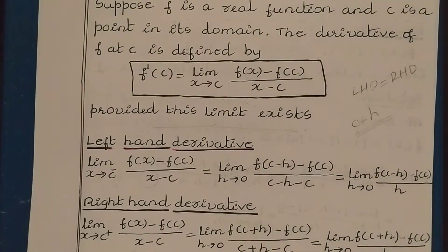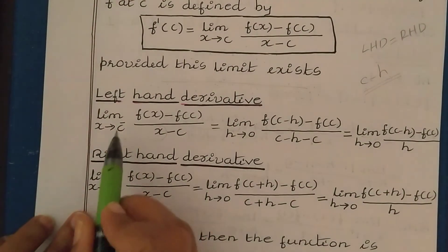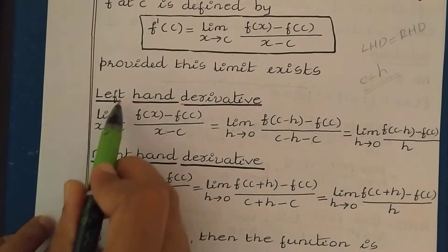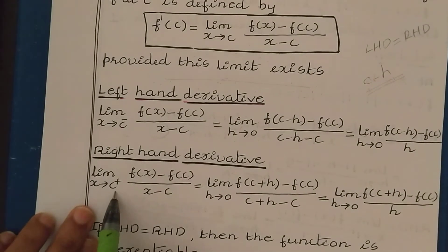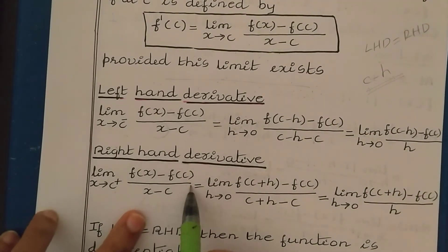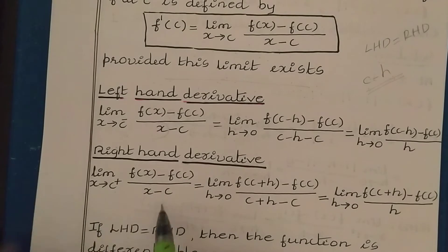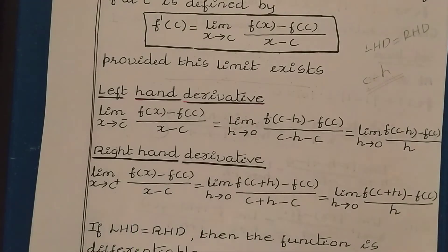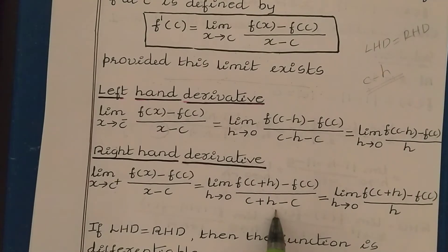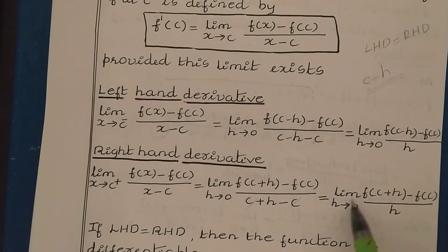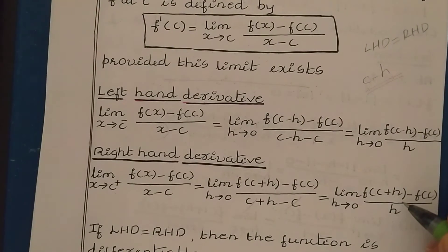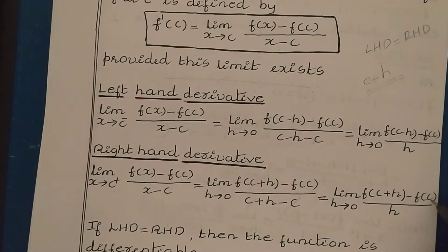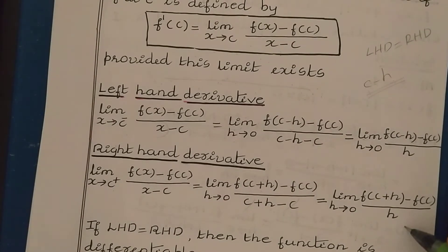Next, let us see what is the right-hand derivative. For the right-hand derivative, we use a plus sign, so wherever you have x, you put c plus h. For f(x) minus f(c) divided by x minus c for the right-hand derivative, in the place of x you put c plus h. After simplifying, we get: limit h tends to 0, f(c plus h) minus f(c) divided by h.